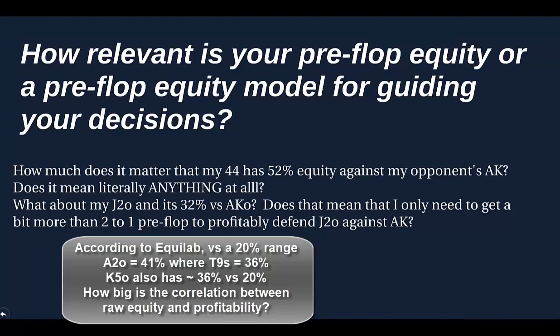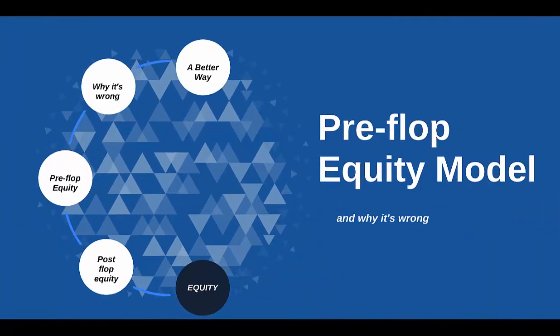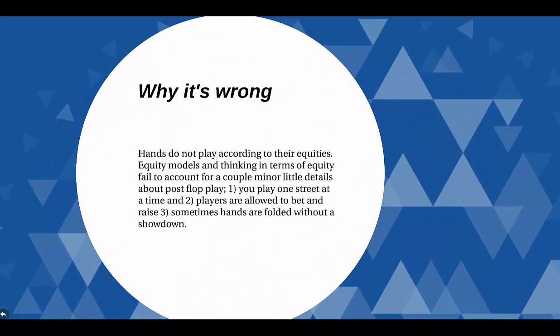There's only a very loose correlation — or a correlation only in specific situations with specific hands against very specific ranges — between a hand's raw equity and how it's going to perform post-flop. It's not nothing, but it's not everything — it's not even close to everything. It's not enough to look at your hand and say 'I probably have this much equity against my opponent's open-raising range and I'm getting the right price, so I should call.' That neglects almost all of the game. Hands do not play according to their equities.